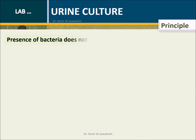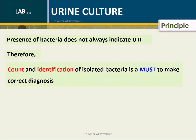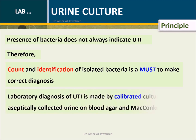Principle: the presence of bacteria does not always indicate UTI. Therefore, count and identification of isolated bacteria is a must to make a correct diagnosis. Laboratory diagnosis of UTI is made by calibrated culturing of aseptically collected urine on a blood agar and MacConkey agar.